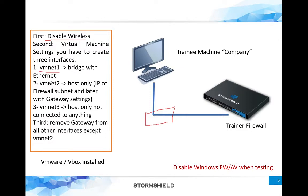Second, configure the virtual machine settings to create three virtual interfaces: VMNet1, VMNet2, and VMNet3. VMNet1 will be bridged with the Ethernet adapter, giving it a virtual interface fully bridged to the physical interface of your laptop.